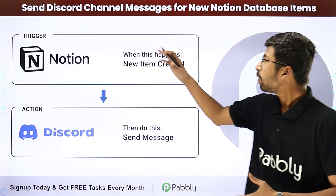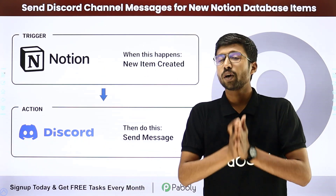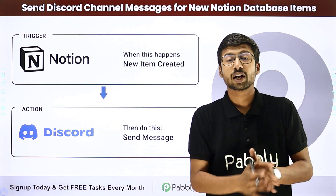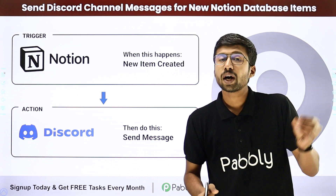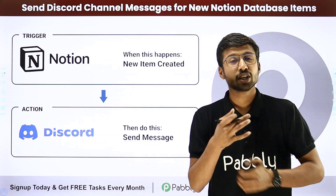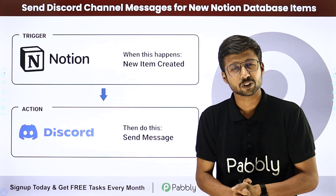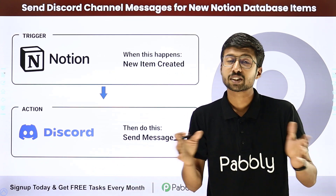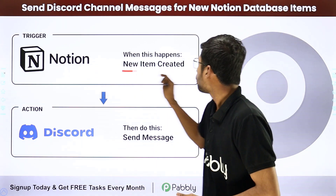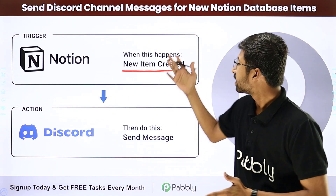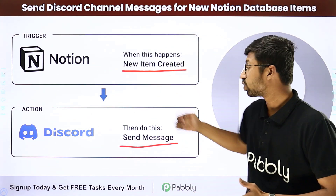In this video, we are going to learn how to send Discord channel messages for a new Notion database item. Suppose you and your team members use Notion to maintain or create all kinds of records and details, and all of you communicate on your Discord channel. Whenever a new item is added in the Notion database, you want to update your team members on Discord with the details of the newly added item. The trigger of this automation will be creating a new item in Notion, and the action will be sending those newly created item details as a channel message on Discord.